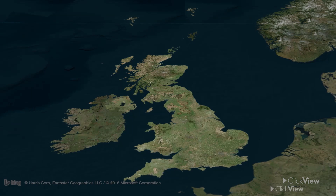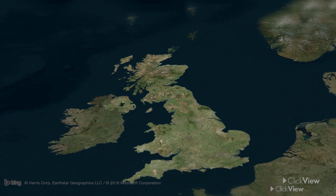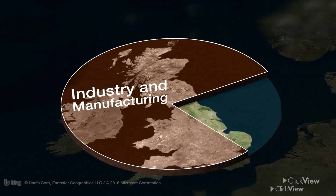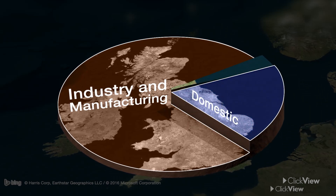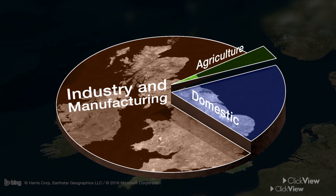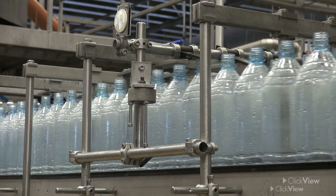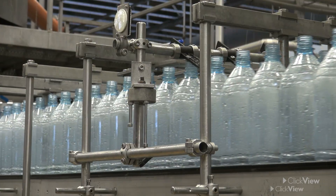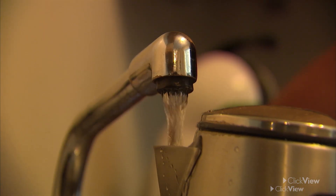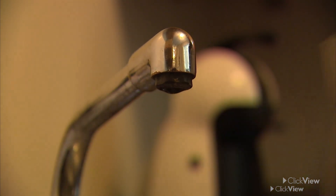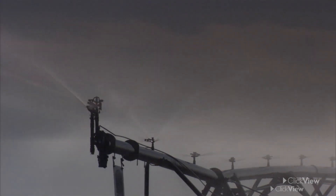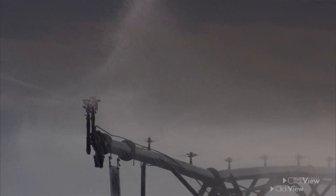Broadly speaking, the three main categories of water use are industry and manufacturing, including power generation, domestic, and agriculture. The breakdown of water use in the UK is about 75% for manufacturing and factories, around 20% for domestic use, and the remaining 5% for agriculture.